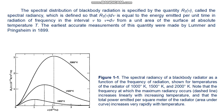Distribution functions, of which spectral radiancy is an example, are very common in physics. For example, the Maxwellian speed distribution function tells us how the molecules in a gas at a fixed pressure and temperature are distributed according to speed. Another distribution function, one which has the form of a decreasing exponential, specifies the decay times of radioactive nuclei in a sample containing nuclei of a given species.